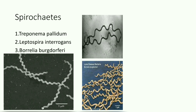The spirochetes causing relative bradycardia include Treponema pallidum which causes syphilis, Leptospira interrogans which causes leptospirosis, and Borrelia burgdorferi which causes Lyme's disease.